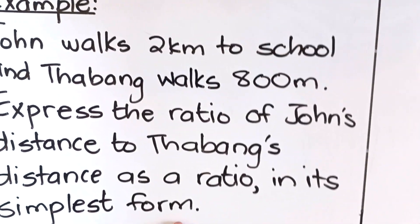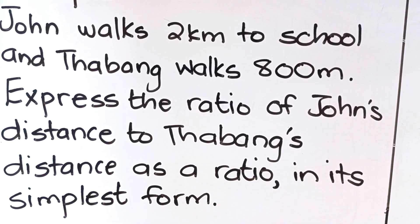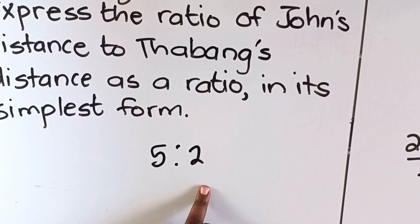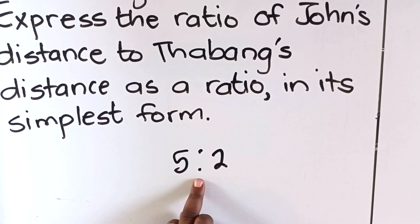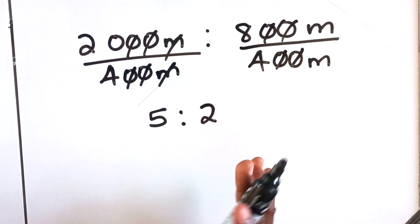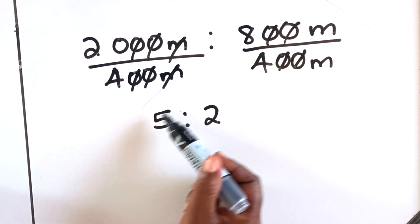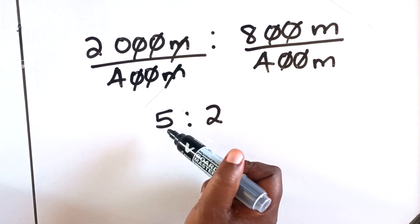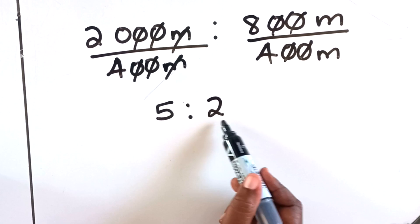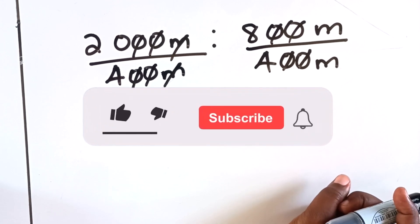So how does that answer our question? They say express the ratio of John's distance to Tabang's distance. So John's distance is 5 to 2 to Tabang's distance, and it's in its simplest form. You can see that there's no factor that you can get into both of them. If you divide by a number and when you get your answer you can still factorize, it's not a problem. Factorize again until you get where you cannot factorize, then that will be your final answer.